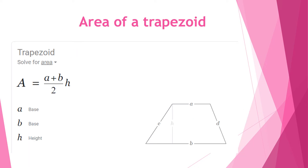To find the area of a trapezoid we have to use the formula A equals (a plus b) over 2, times height, where a and b are the bases and h is the height. This is the illustration of the trapezoid.